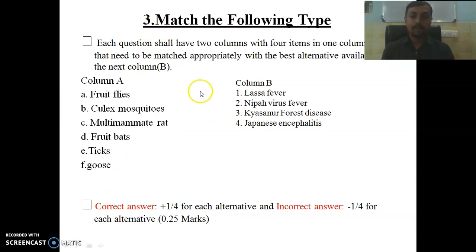Third comes match the following. Dear friends, there will be two columns, column A and column B. Examiners are very brainy. They will not give the same number of options in column A and column B. In column A there will always be more number of options. You have to select the correct option. For the correct answer you will get 0.25 marks and for incorrect answer you will lose minus 0.25 marks.